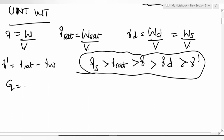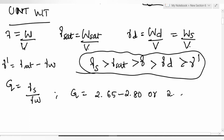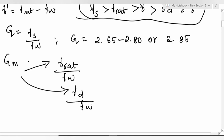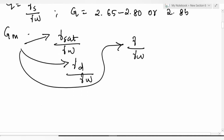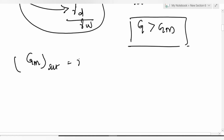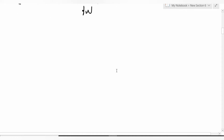Specific gravity G = gamma_s / gamma_w, with values ranging from 2.65 to 2.85. Relative density Gm = gamma_saturated / gamma_w, or gamma_dry / gamma_w, or gamma / gamma_w depending on condition. Always remember: G is greater than Gm.